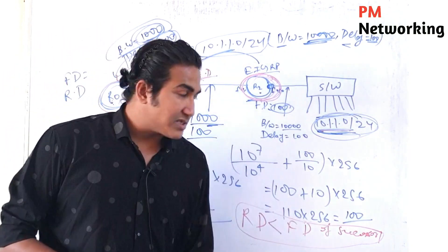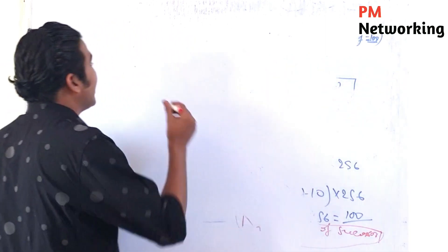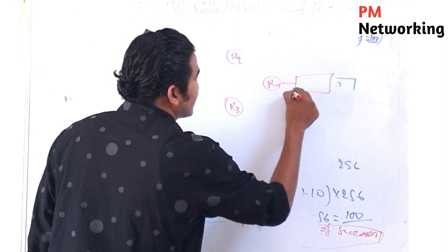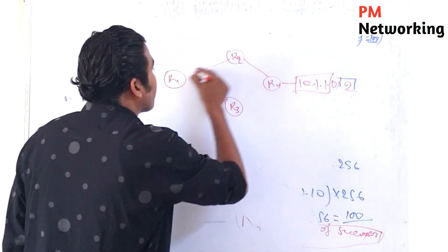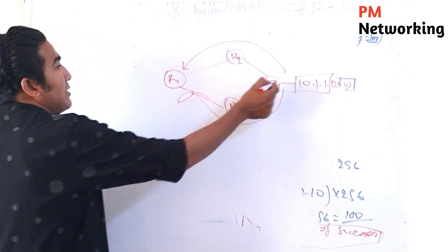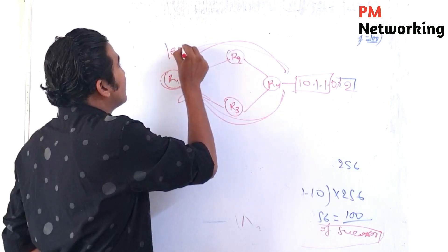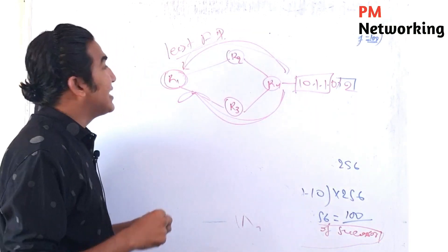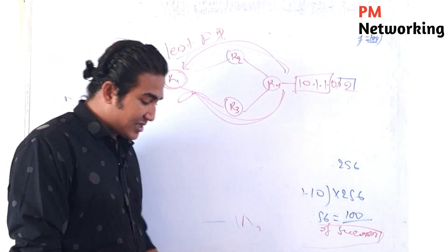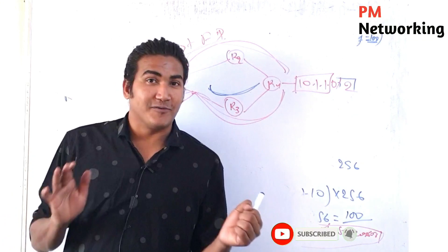This is how an EIGRP router calculates metric. Suppose we have a topology with R1, R2, R3, and R4, and the same network 10.1.1.0/24. R1 is getting this prefix from two sides — from R2 and from R3. Whichever path gives the least FD will become the successor. If the other path satisfies the feasibility condition — meaning its RD is less than the FD of the successor — then that path will become the feasible successor.